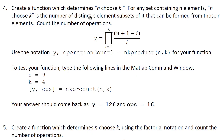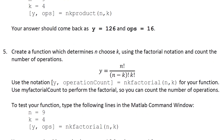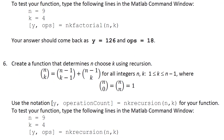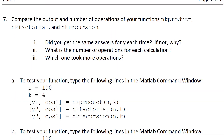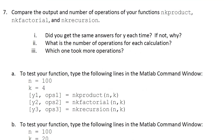In some previous videos, we created n choose k functions in three different ways: a product definition, a factorial definition, and a recursive definition — which was super crazy and had to be discussed separately because it was super weird. Now what I'm looking to do is compare n-k-product, n-k-factorial, and n-k-recursion.